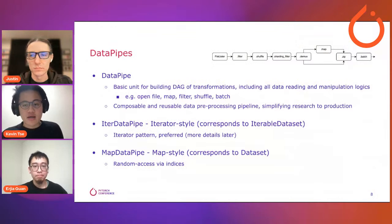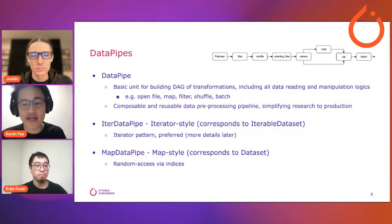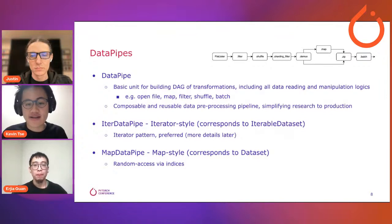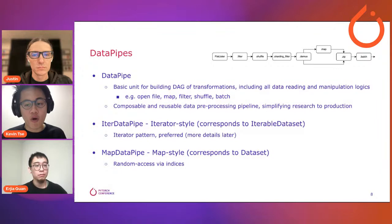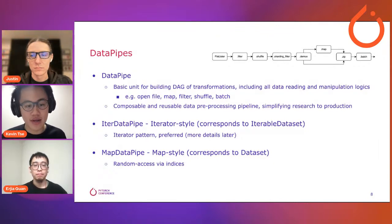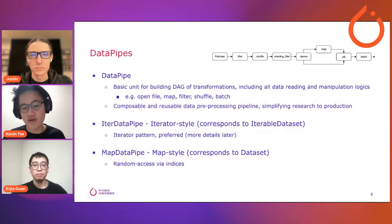Now we'll look at some major components of the library, starting with data pipes. A data pipeline can be described as a series of steps your program executes to prepare your samples for training or inference. These steps can be seen as a graph — specifically a directed acyclic graph — where each node represents a transformation step. Based on this idea, in TorchData we introduce composable and reusable building blocks called data pipes. Each data pipe performs a small transformation: opening a file, mapping a function, filtering, shuffling, or batching before handing off output to the next data pipe. We have two types: IterDataPipe and MapDataPipe.